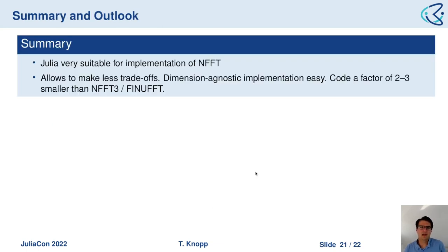To summarize: Julia is very suitable for implementing performance-critical algorithms like the NFFT. We needed to make fewer trade-offs — it was straightforward to have a dimension-agnostic implementation. The code size of NFFT.jl is a factor of two to three smaller than NFFT3 and FiNUFFT, in part because we don't require code duplication.